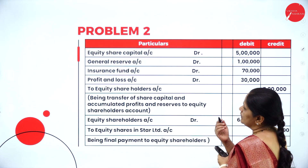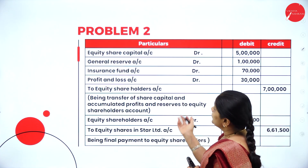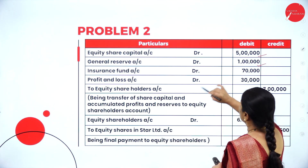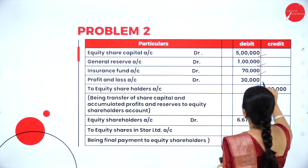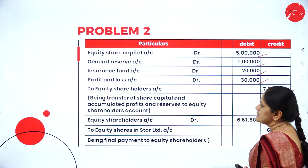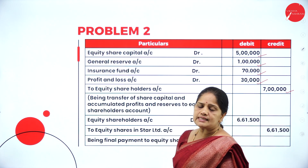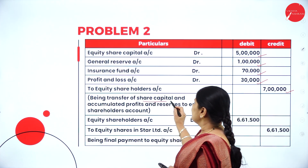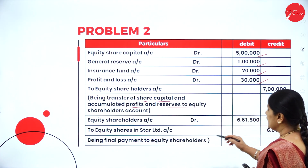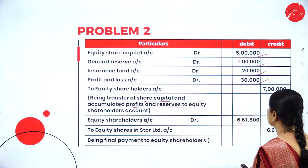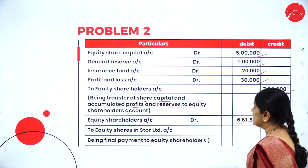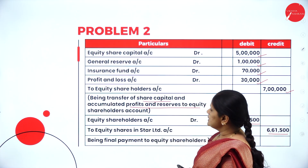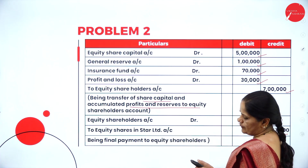Next, transfer all reserves in the balance sheet to the shareholders account. Equity share capital account debited 5 lakhs, general reserve account debited 1 lakh, insurance fund account debited 70,000, profit and loss account debited 30,000 — to equity shareholders account 7 lakhs, being transfer of share capital, accumulated profits and reserves. Then equity shareholders account debited 6,61,500 to equity shares in Star Limited 6,61,500 — purchase consideration paid to equity shareholders.